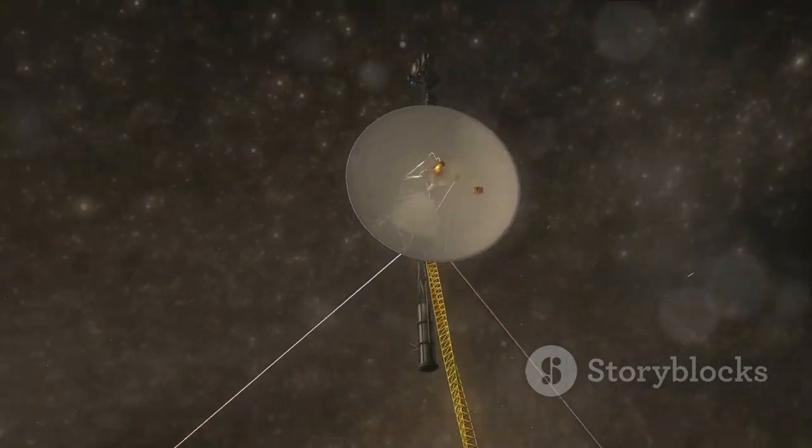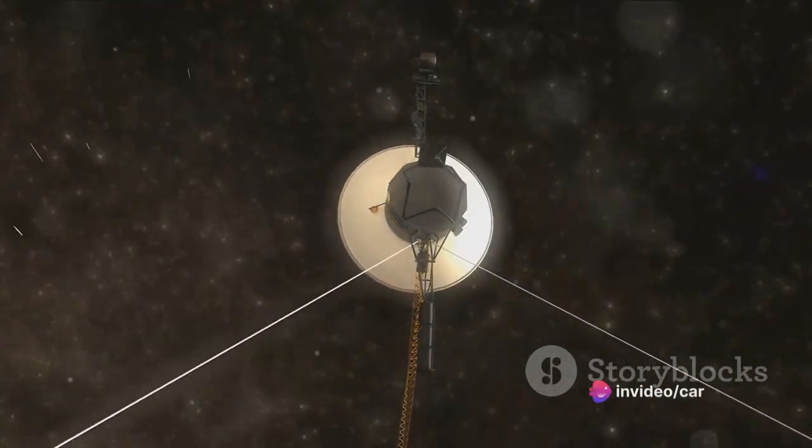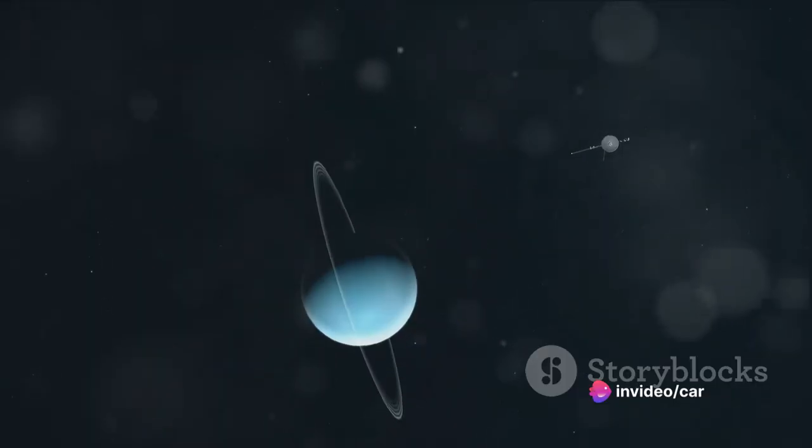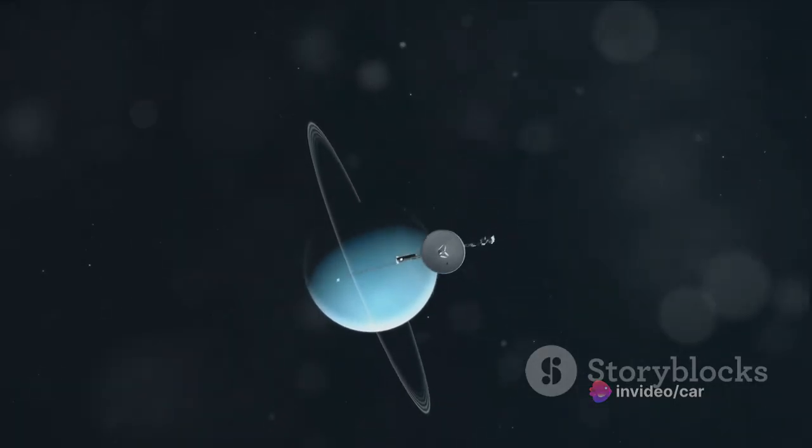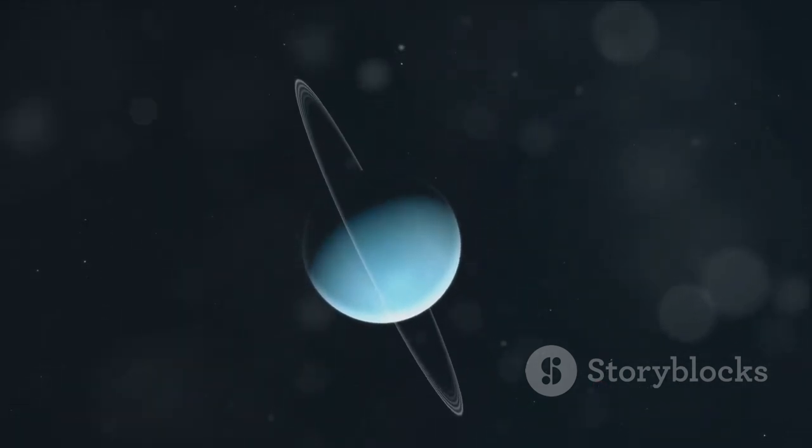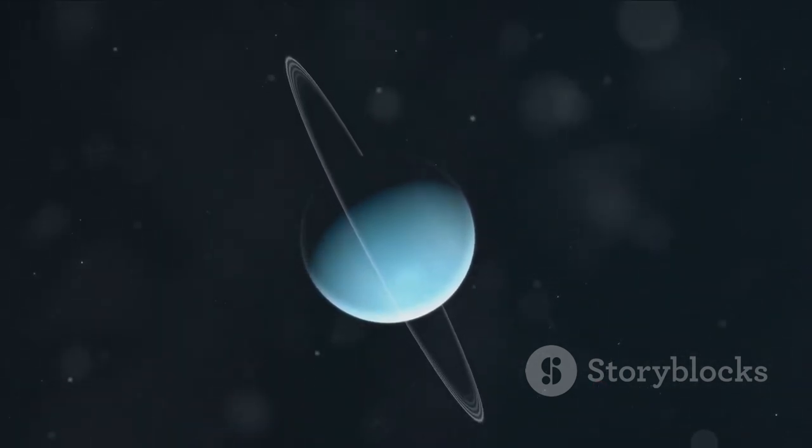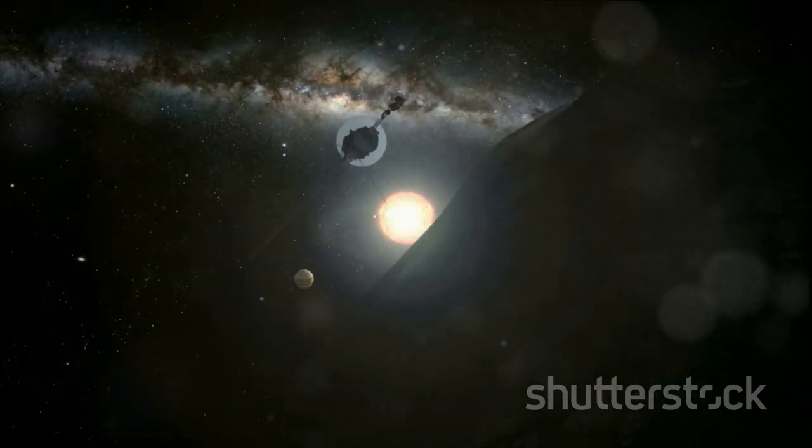Now let's talk about where these spacecrafts are. Voyager 1 is currently in interstellar space, the region between the stars, filled with material ejected by the death of nearby stars millions of years ago. Voyager 2 is not far behind. They are still sending data back to Earth, helping us understand more about our solar system and the universe beyond. They've shown us stunning views of the giant planets and their intriguing moons, revealing active volcanoes, icy geysers, and a lot more.